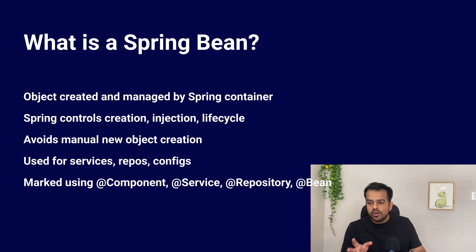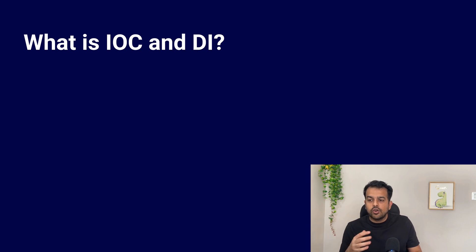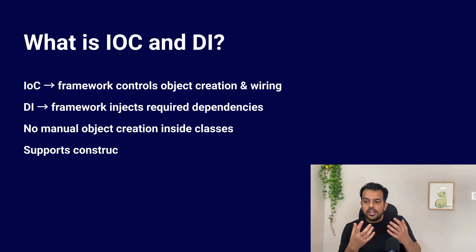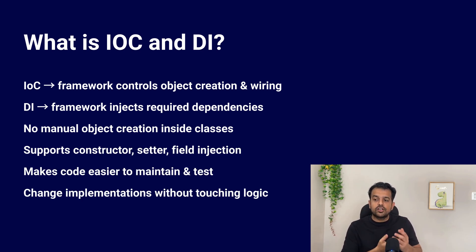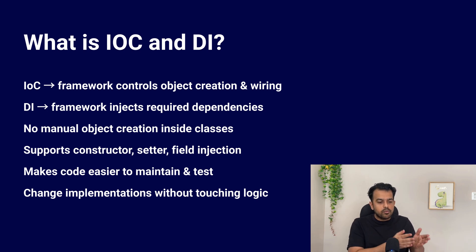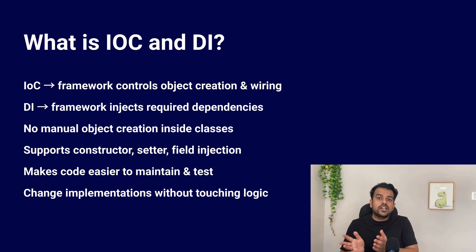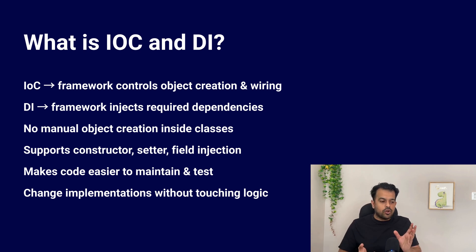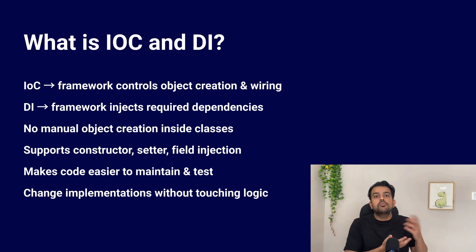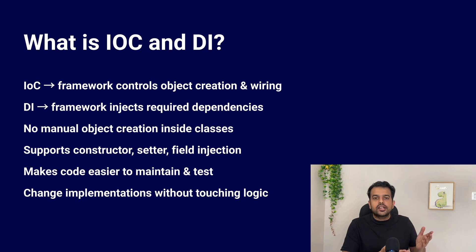Next question: what is IoC and DI — Inversion of Control and Dependency Injection? Inversion of Control (IoC) is a concept where the control of creating and managing objects is moved from our code to a container — the Spring container. Instead of our classes creating their own dependencies, Spring creates those dependencies and injects them wherever needed. Dependency Injection (DI) is how IoC is implemented: we don't create dependencies directly in the class; we just declare that we need them, and Spring provides those dependencies from the container.